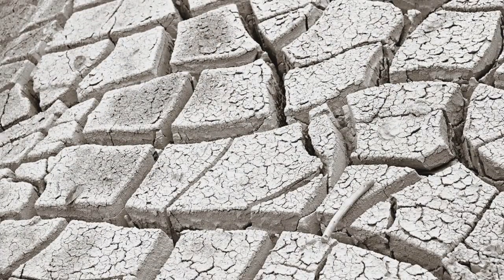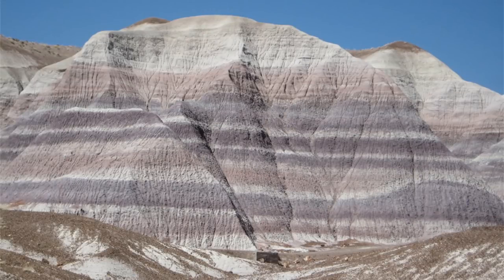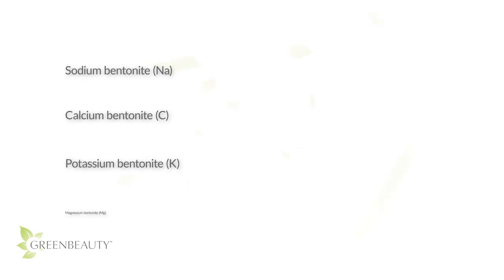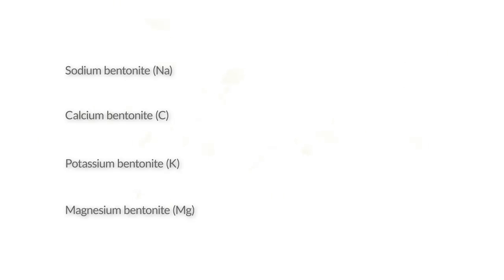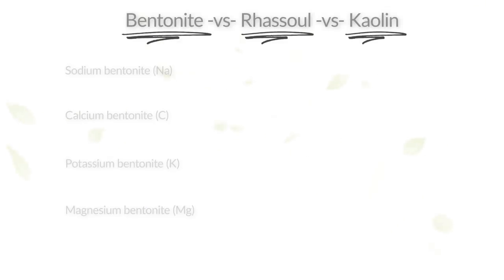Bentonite is mined from deep rock deposits that are thousands of years old. The mineral content varies based on where it's mined, so bentonite that contains mostly sodium is called sodium bentonite, and bentonite clay that contains mostly calcium is called calcium bentonite. In the Western world, the most popular types are sodium bentonite and calcium bentonite.